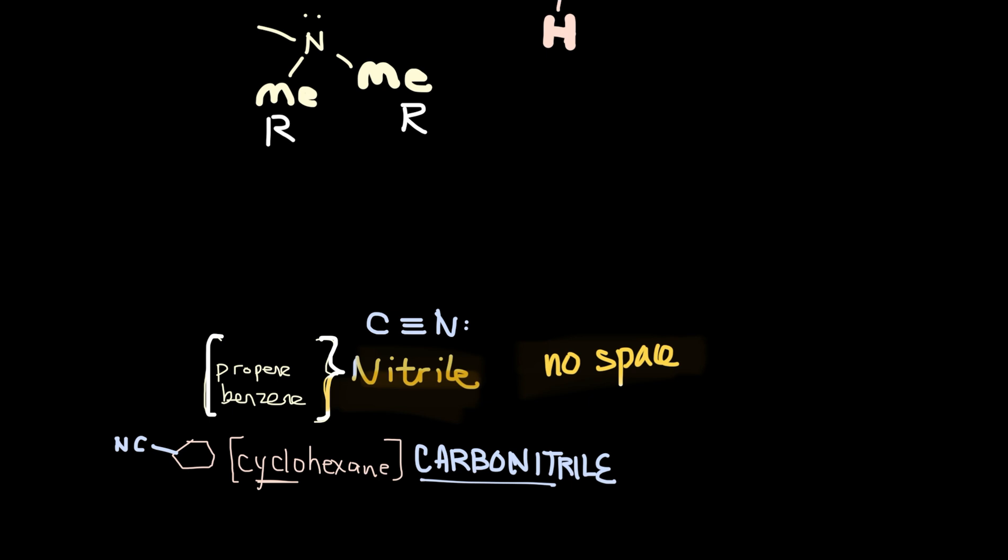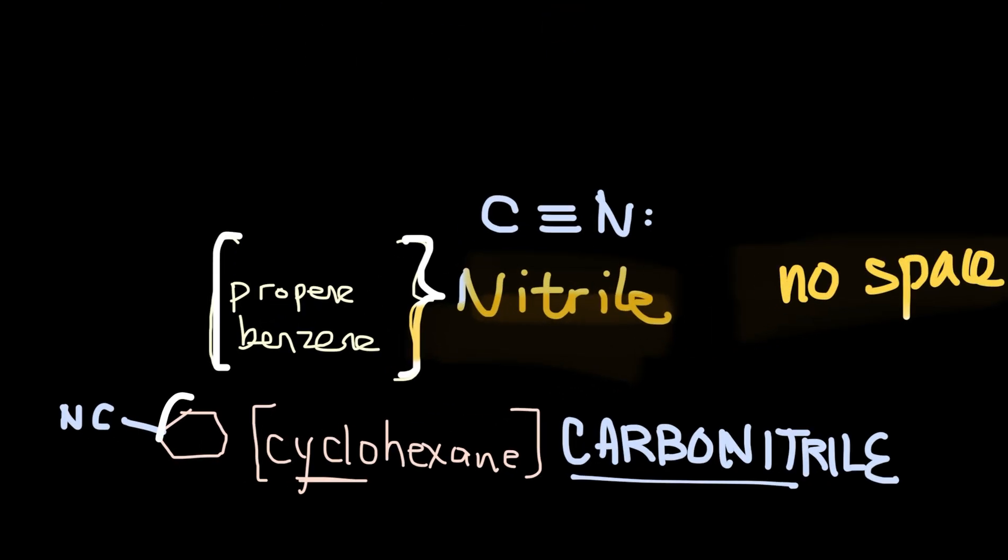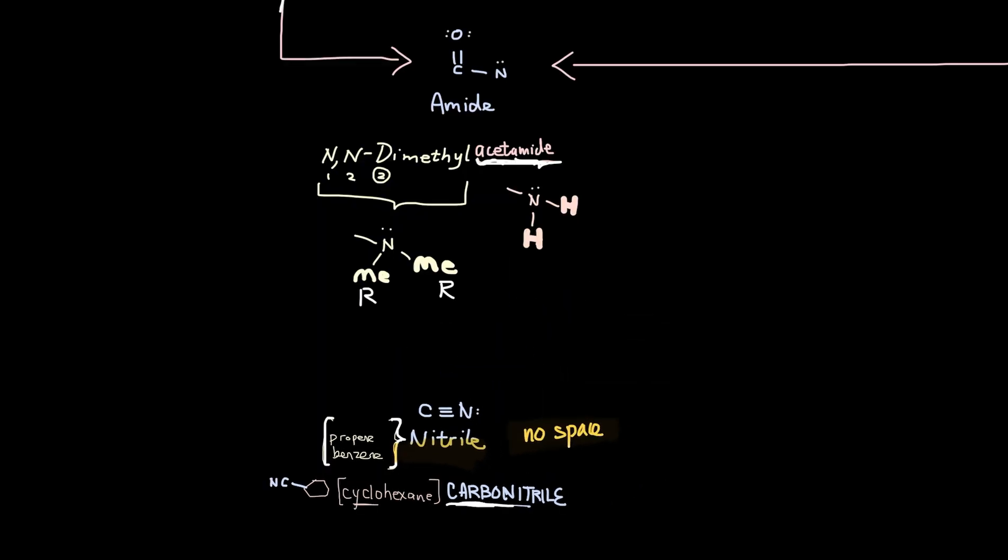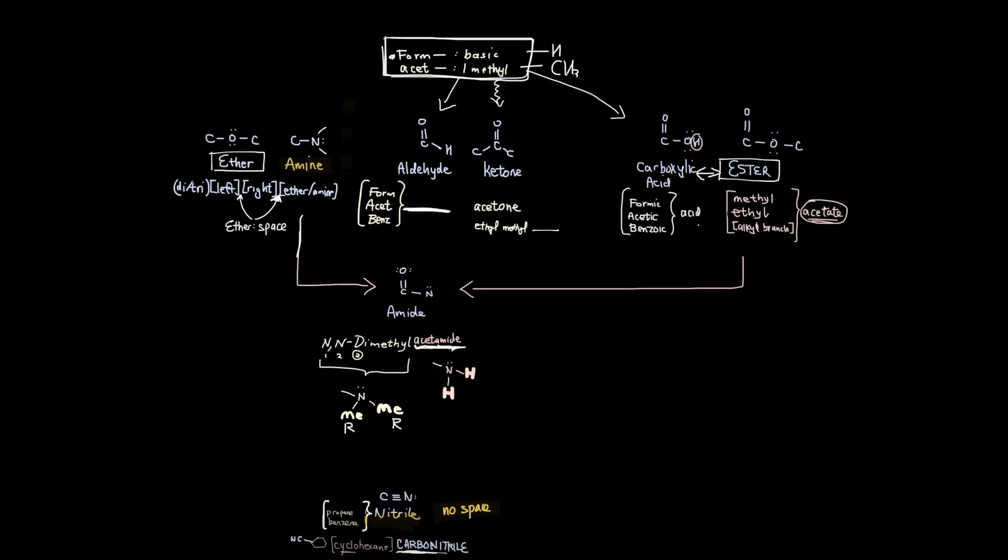Nitrile, propene nitrile. But if you see a cyclic compound bonded to a CN, you would write a cyclic compound. But instead of nitrile, you will add carbonitrile. So I hope that was helpful.